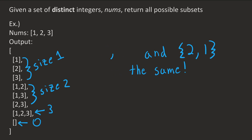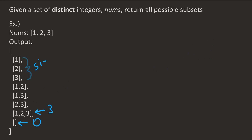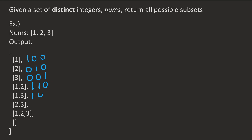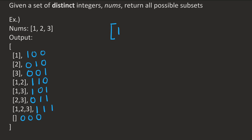So how do we solve this problem using bits? It turns out that every single subset corresponds to a unique bit string, or binary number, and vice versa. For instance, in this example, the subsets in our answer can be represented by the following bit strings. Basically, for every element in the original set, I put a 1 if our subset includes it, and a 0 if our subset does not include it.